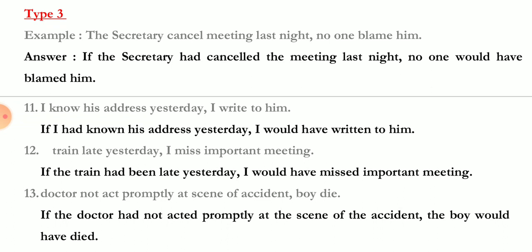Type 3 example: 'The secretary cancel meeting last night / no one blame him' — answer: 'If the secretary had canceled the meeting last night, no one would have blamed him.' The if-clause is in past perfect tense and the other clause uses 'would have' plus verb third form.